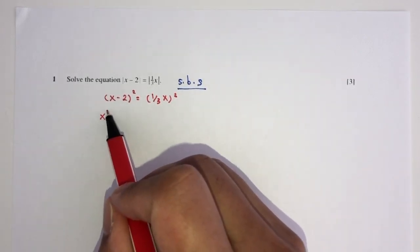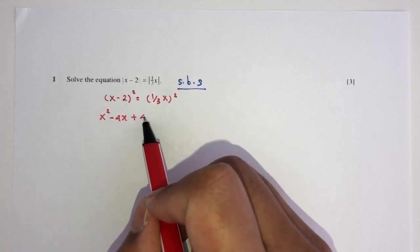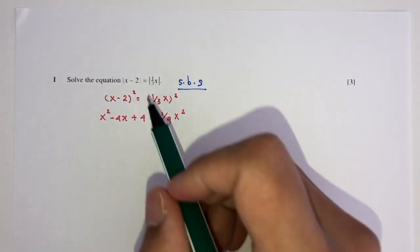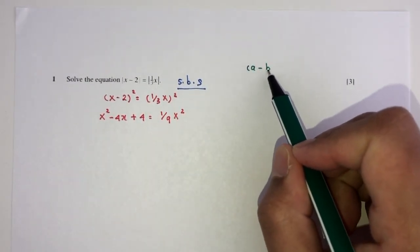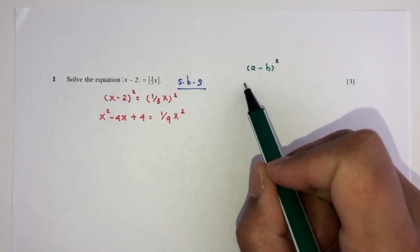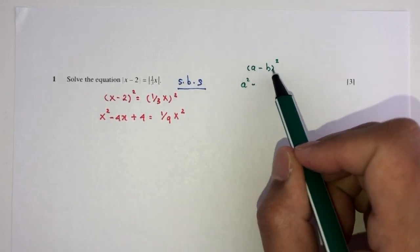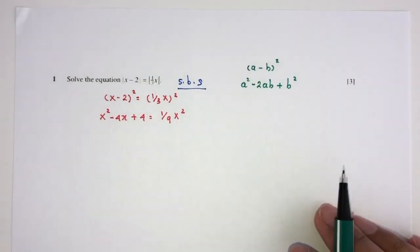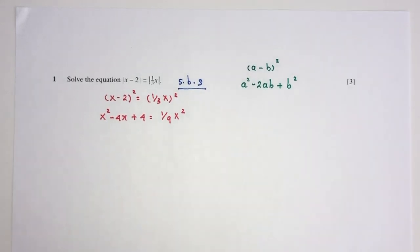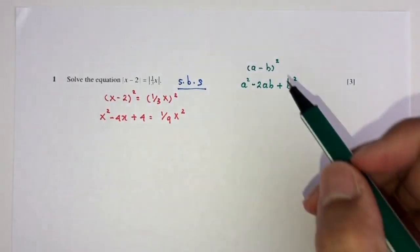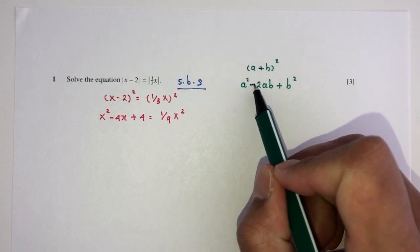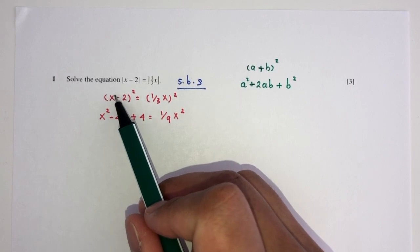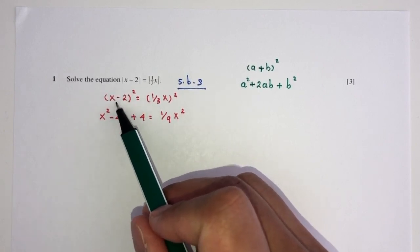You will have x squared minus 4x plus 4 is equal to 1 over 9x squared. Now, how do you expand this directly? We should know that (a minus b) squared, if you were to expand, will be a squared minus 2ab plus b squared. This is how you expand this one in this question — replace a by x and b by 2 to get this expansion.